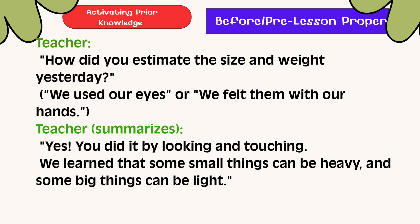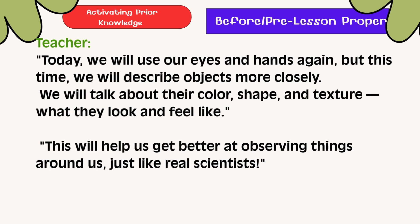We learned that some small things can be heavy and some big things can be light. Today, we will use our eyes and hands again. But this time, we will describe objects more closely. We will talk about their color, shape, and texture — what they look and feel like. This will help us get better at observing things around us, just like real scientists.